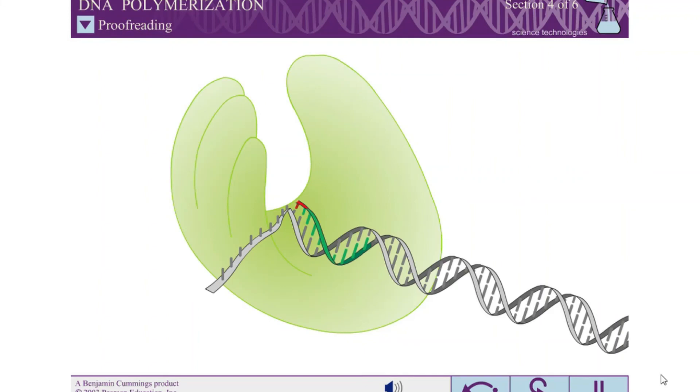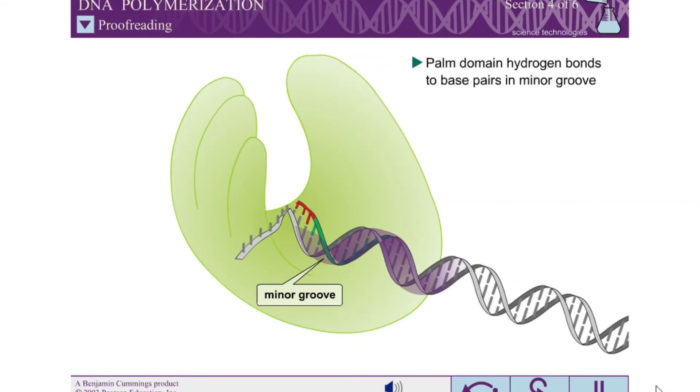Another function of the palm domain is proofreading. The palm region makes extensive hydrogen bond contacts with the base pairs in the minor groove of the newly synthesized DNA. These contacts are not base specific, but they only form if the recently added nucleotides are correctly base paired.